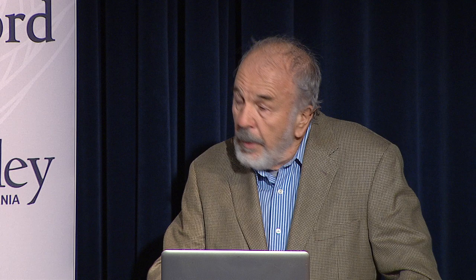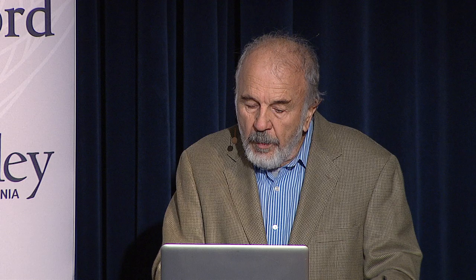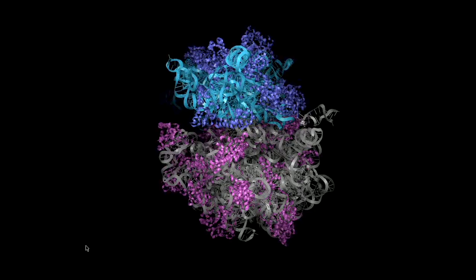One discovery from this is that rotation of the head domain of the small ribosomal subunit is crucial for movement of the mRNA and tRNA — the second step of translocation and the rate-limiting step of translocation. The rotation of the head is shown here, and these are huge movements of about over 30 angstroms.